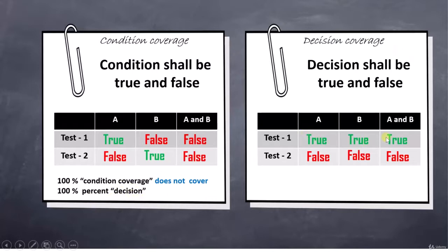And that is the reason we said 100% condition coverage does not cover 100% decision. And when we come to the decision coverage here, our main focus was to make A and B true once and false once.